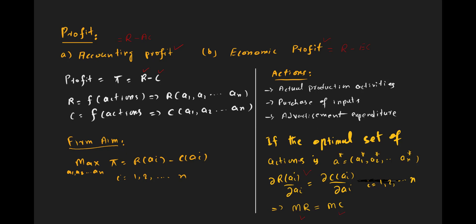After the first-order condition, we apply the second-order condition. We take the derivative of the marginal revenue function and the derivative of the marginal cost function. If the slope of the marginal cost function — obtained by taking the derivative of the marginal cost function — is greater than the slope of the marginal revenue function, this confirms that profit is maximized.